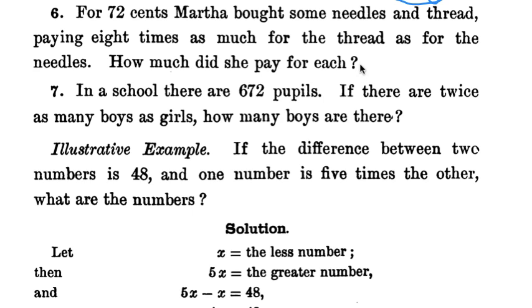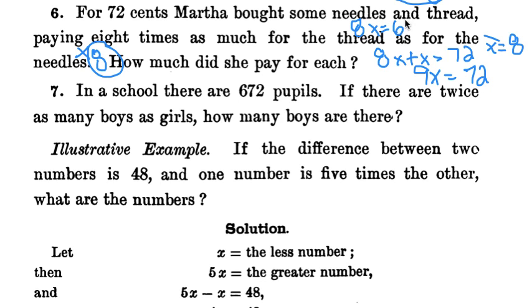Number 6. For 72 cents, Martha bought some needles and thread, paying 8 times as much for the thread as for the needles. So we have less information about needles. 8 times for the thread. How much did she pay for each? So we know altogether 8x and x is 72. 8 plus 1, 9x equals 72. And 72 divided by 9 is going to give us 8. So we know 8 for the needles because that's x, and then 8 times 8, 64 for the thread. So we just take it down here and we plug it in up to the top.